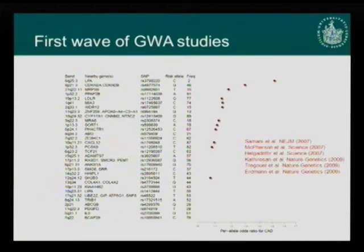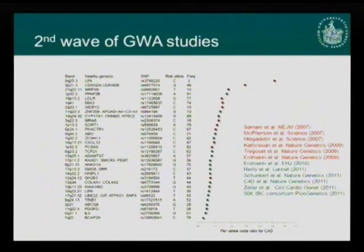In order to also identify variants with even smaller effect sizes, we had to increase the sample size. Even though these were really large studies back then with 3,000 cases and controls, today we have large meta-analyses with several thousand cases and controls. For example, the CARDIoGRAM consortium collected 22,000 cases and 60,000 controls, and this large meta-analysis was able to identify variants with an odds ratio below 1.1.